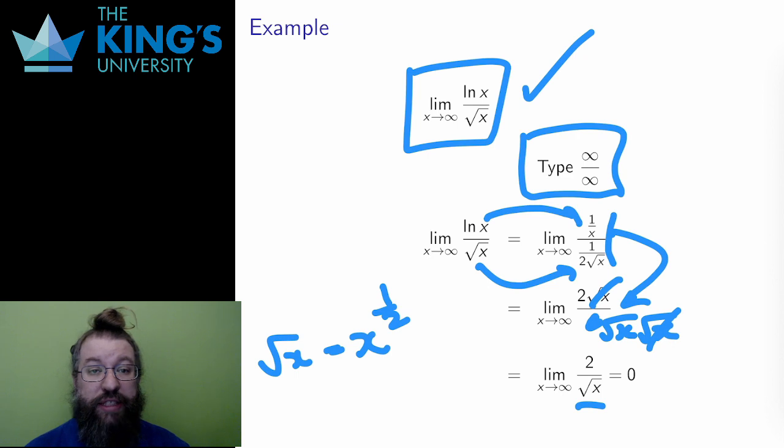Then I have a limit that I can just analyze. 2 is fixed, √x is growing, therefore the limit must be 0. And this is how L'Hôpital's rule helps.